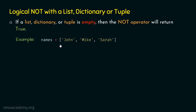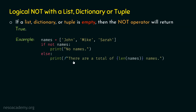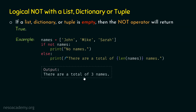Now let's say we will print 'no names' if the names list is empty; otherwise, we will print the length of the list. Let's check this condition: if not names — this means if the names list is empty, then print 'no names'. Otherwise, print 'there are a total of {len(names)} names'. So this entire string will be printed on the screen, where len(names) will be replaced by the length of the list. As this list is not empty, the else part will be evaluated. Therefore, 'there are a total of 3 names' will be printed on the screen, because the length of the names list is three. The output of this program is 'there are a total of 3 names'.